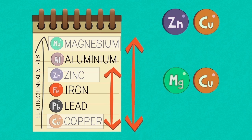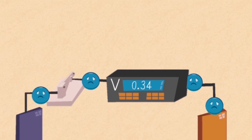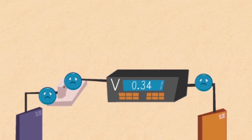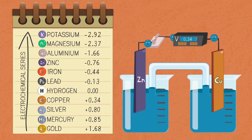Electrons flow along the wire from the metal higher in the electrochemical series to the metal lower down. The electrode potentials are arranged by the substance's ability to donate its electrons—that is, how easily they are oxidized. All of the values are measured in volts.